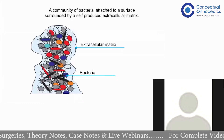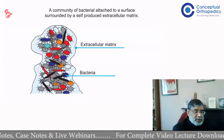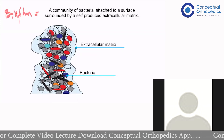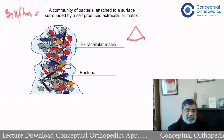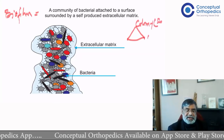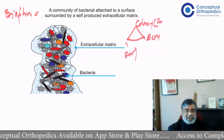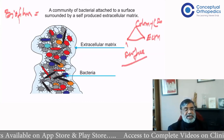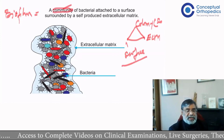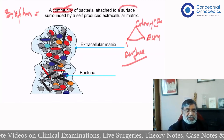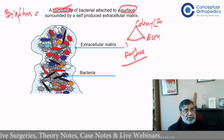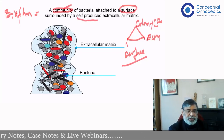What is the definition of a biofilm? 'A community of bacteria attached to a surface, surrounded by a self-produced extracellular matrix.' Three key things: first, it has to be a colony — more than one, sessile; second, an extracellular matrix; third, a surface. Importantly, the surface need not be an implant — it can attach to biological surfaces too, as in chronic osteomyelitis or chronic ulcers.